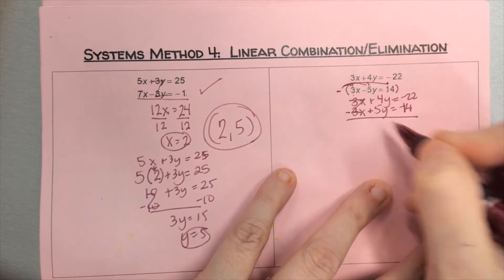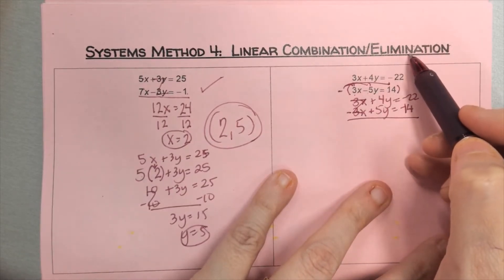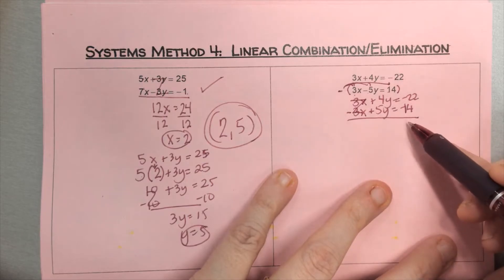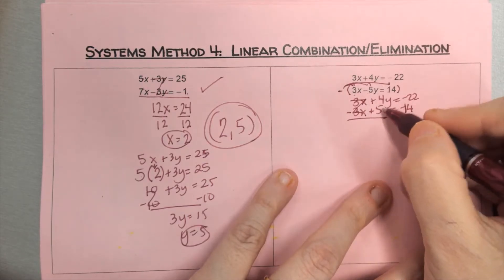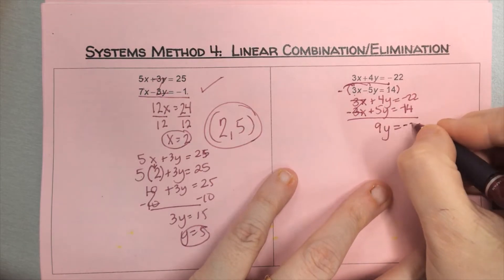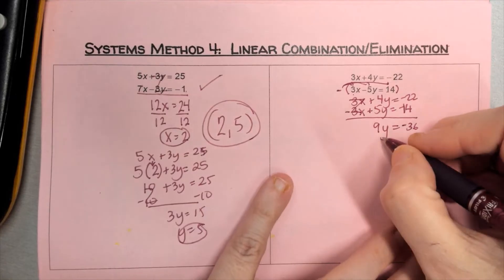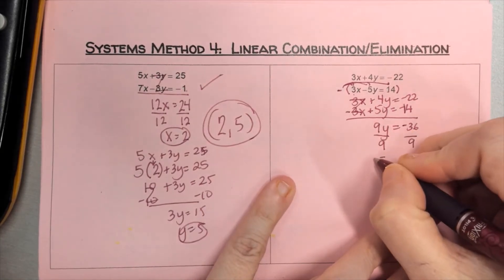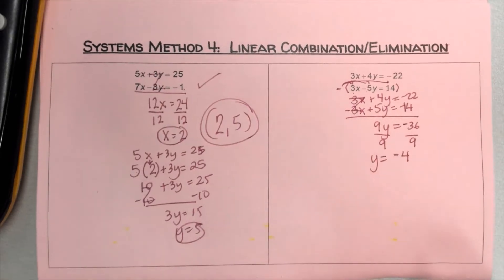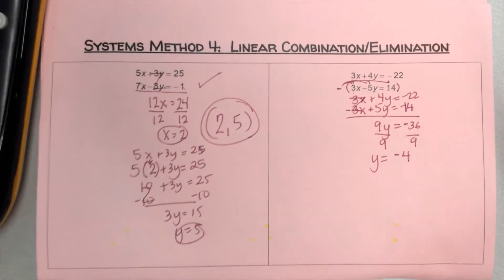Now I see a zero pair with the x terms. I zero out the x variable to eliminate it, then combine the equations: 4 plus 5 is 9y, and negative 22 plus negative 14 is negative 36. Don't be afraid to use your calculator. Dividing by 9 gives y equals negative 4.